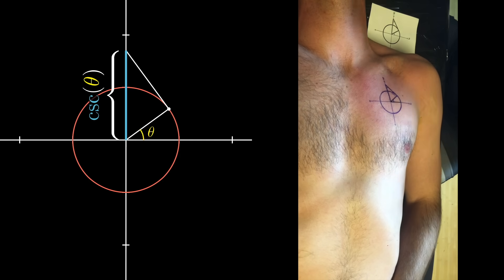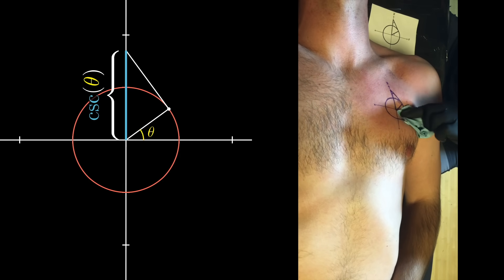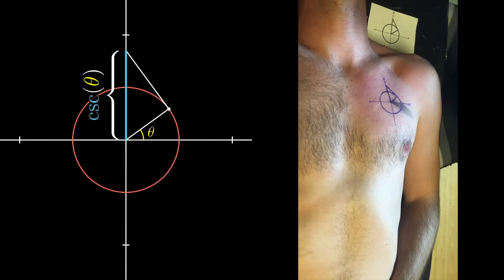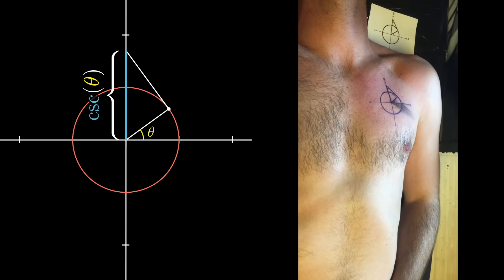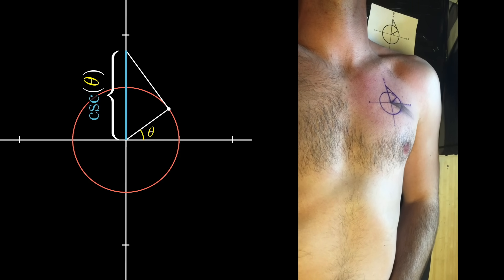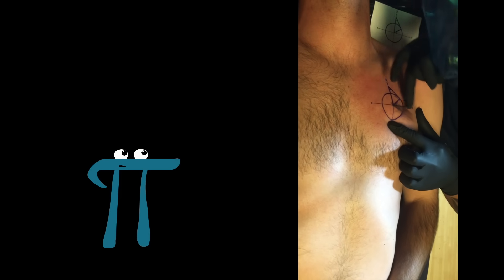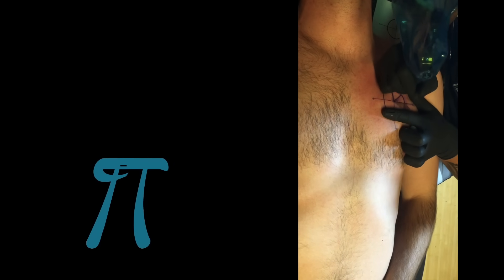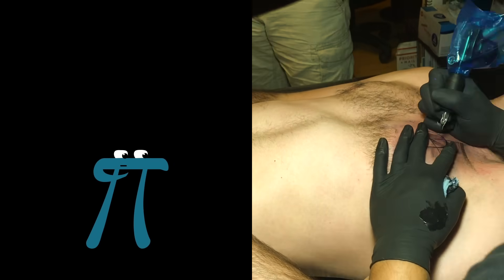It got me thinking though, about why on earth we teach students about the trigonometric functions cosecant, secant, and cotangent, and it occurred to me that there's something kind of poetic about this particular tattoo. Just as tattoos are artificially painted on but become permanent as if they were a core part of the recipient's flesh.